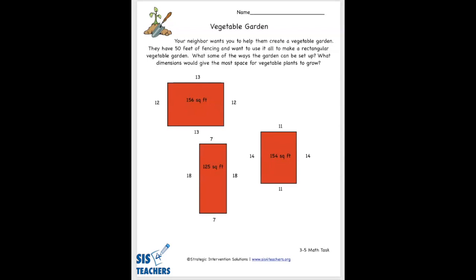Here's a sample of a possible way someone might solve it. I drew some rectangles and was looking at my justification for how I might want the garden to grow. Do I want it to be 7 by 18 or 11 by 14? My written justification would talk about how the perimeter uses all 50 feet of fencing, while inside I've done calculations to figure out the square footage — the area — of that particular garden.